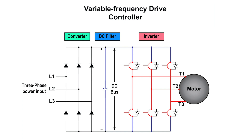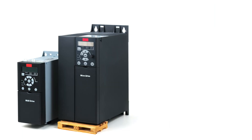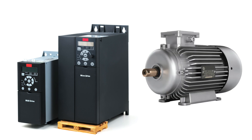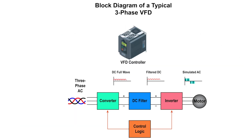The DC bus functions as a filter in order to smooth the uneven rippled output to ensure that the rectified output is as close to pure DC. The inverter takes the filtered DC from the DC bus and converts it into a pulsating AC waveform. Controlling the output of the inverter, the pulsating AC waveform can simulate an AC sine wave at different frequencies. A control system is incorporated to control the output voltage being fed to the motor and to maintain a constant ratio of voltage to frequency. It consists of an electronic circuit which receives feedback information from the driven motor and adjusts the output voltage or frequency to the desired values.